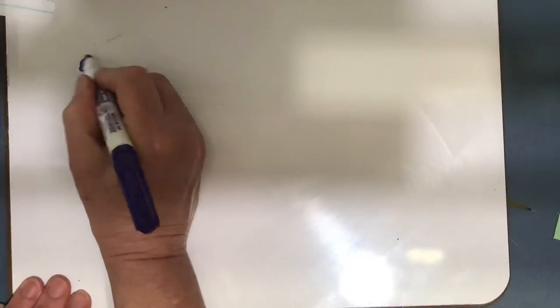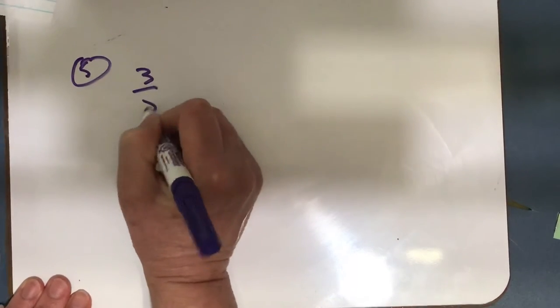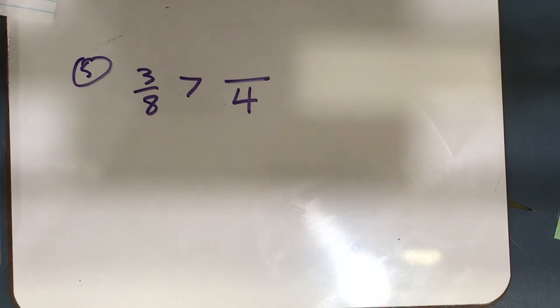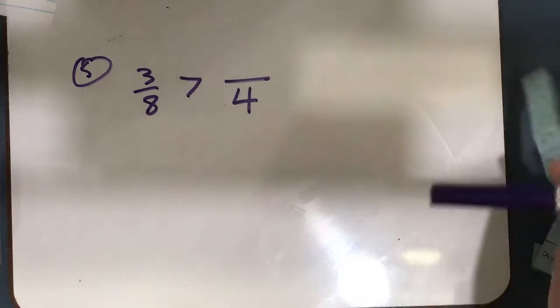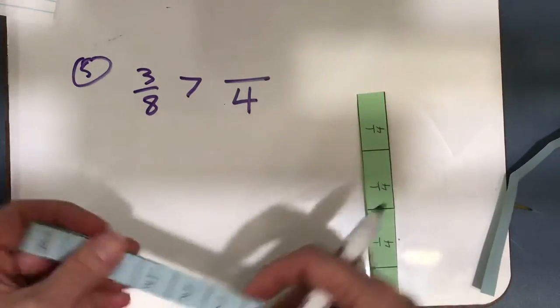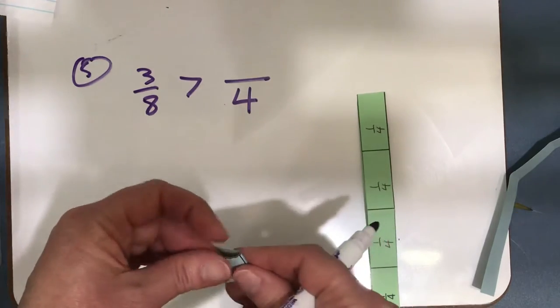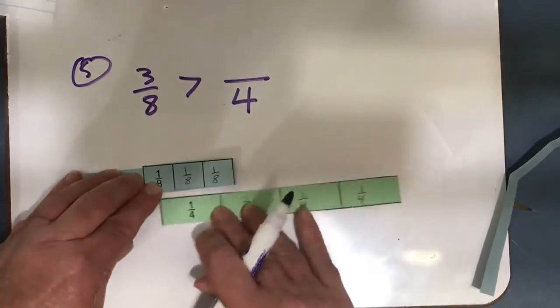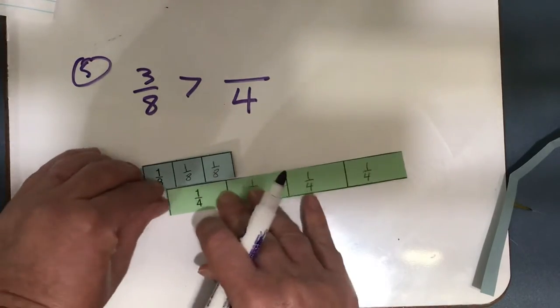Let's go down and look at number 5. I'm comparing 3 eighths is greater than something fourths, so I need to figure out what that would be. So I'm going to get my fraction strips here, here are my fourths, and here are my eighths. Here's 3 eighths, and that's greater than, if I put 1 fourth.